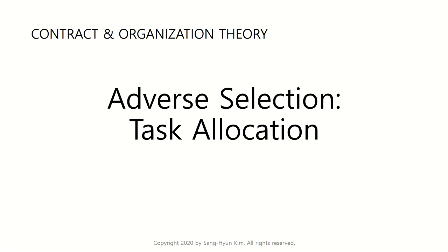Hello, welcome back. Thus far, we have discussed the moral hazard problem, the basic principal-agent model, the relative performance evaluation, and team incentives. In those discussions, we considered the two big problems: the tension between insurance and incentive, and the free-riding problem.